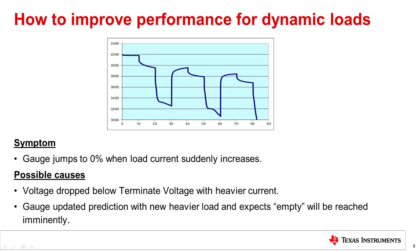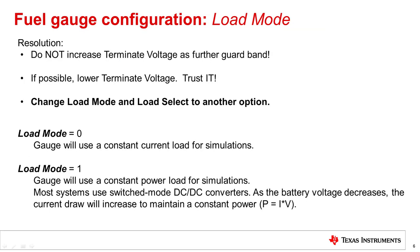At times, even after programming the correct ChemID and performing the learning cycle, correct gauging performance may not be obtained. We shall look into other parameters that need to be tweaked to obtain the best performance. Dynamic loads is one such instance where you may see the SOC dropping to 0. Possible causes are that the voltage may have dropped to the terminate voltage under a heavier load, or the gauge may have updated its prediction with the new heavier load and expects empty will be reached imminently.